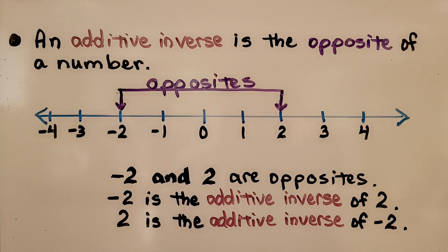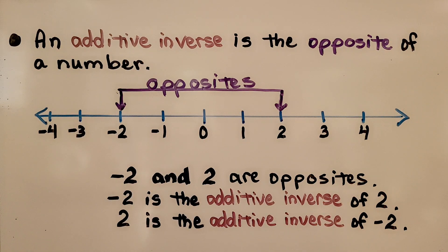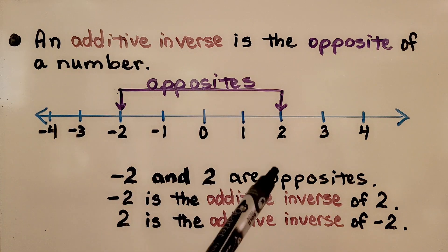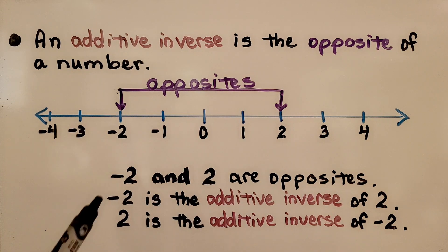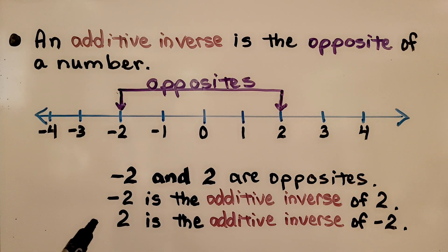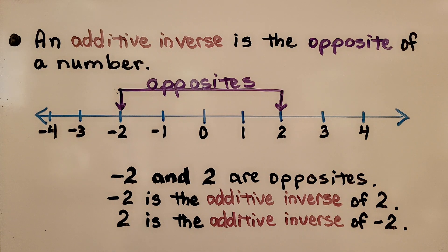An additive inverse is the opposite of a number. It's the opposite across zero on a number line. Negative two and two are opposites. Negative two is the additive inverse of two, and positive two is the additive inverse of negative two.